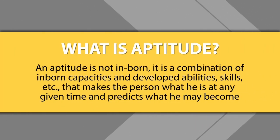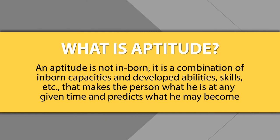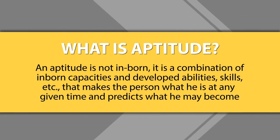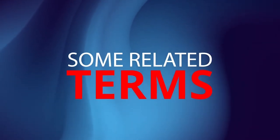What is aptitude then? Many people assume that aptitude is something inborn. No, it is not only inborn. It is a combination of inborn capacities and developed abilities and skills which make a person what he is at a given time and also predicts what he may become in future. Aptitude has both aspects — it tells how a person is now and what he or she may become in future. There are many related terms when we talk about aptitude: capacity, proficiency, ability, and special ability.